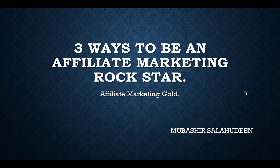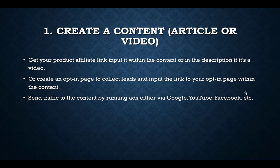So without wasting much time, let's go straight into it. The first method is by creating content. The content can either be a video or an article. First, get your affiliate link and create content that is in line with the products you are trying to promote.